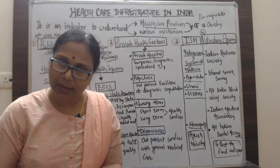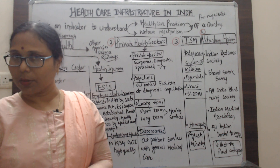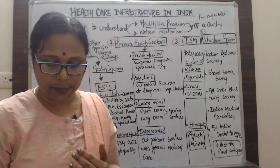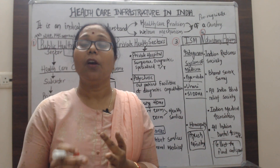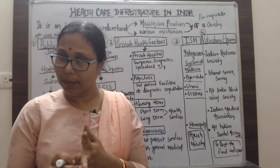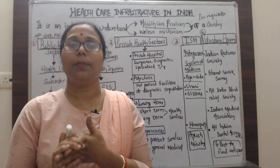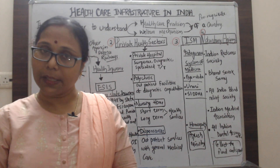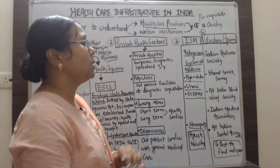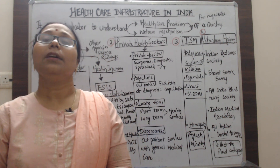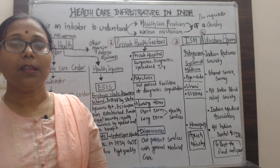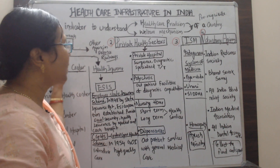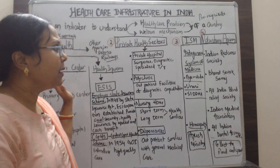In addition to these insurance schemes, other agencies are there — like Defense Health Services and Railway Health Services. Defense Health Services cover employees of the Indian Navy, Air Force, and Army, as well as their relatives. Railway employees also get health services through the Railway Health Services infrastructure.